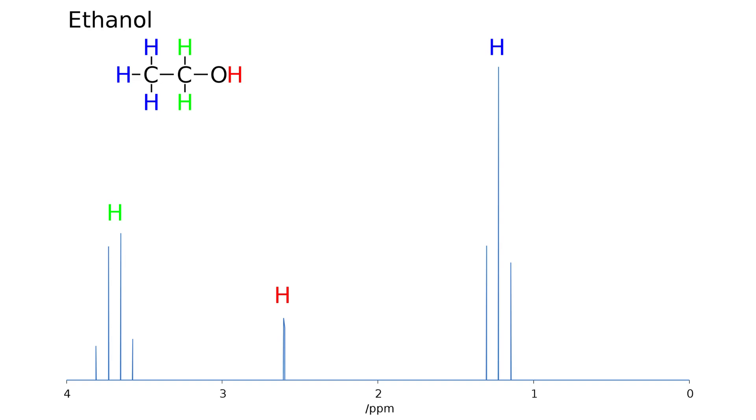Before we jump into the nitty-gritty of how to interpret NMR spectra, let me remind you that the x-axis is read from right to left and its units are parts per million.